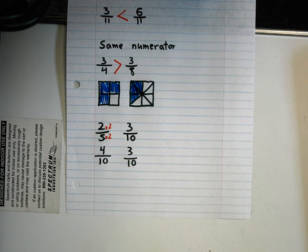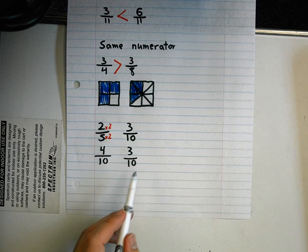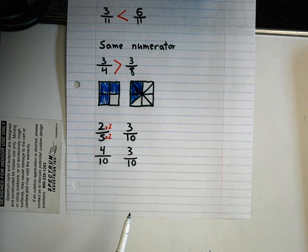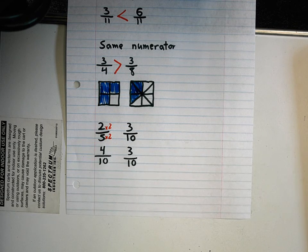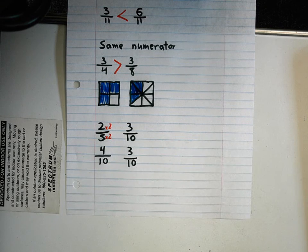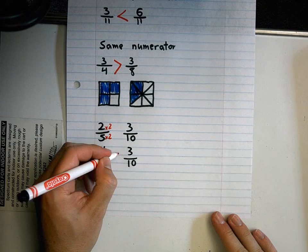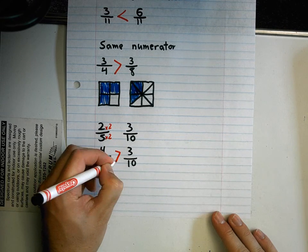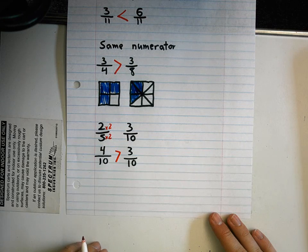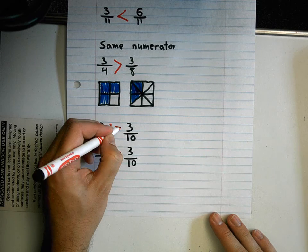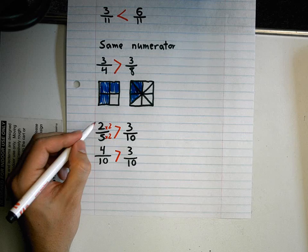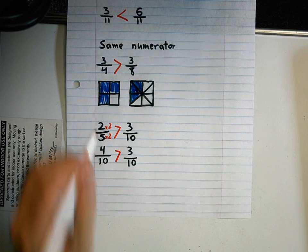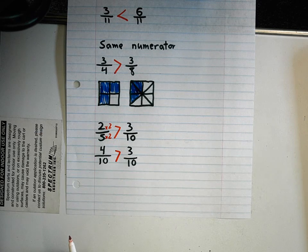With that I can see the denominators are the same. When you have the same denominator you just look at the numerator. So three tenths and four tenths — I know that four tenths is greater than three tenths. So I know that two fifths is greater than three tenths because they're equivalent fractions.